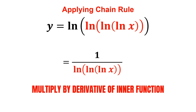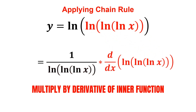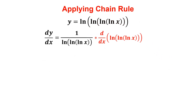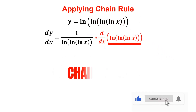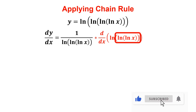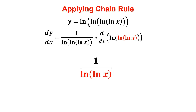According to the chain rule, we then multiply by the derivative of the inner function, which is natural log of natural log of ln x. Notice this is itself a composite function, so we apply the chain rule again. Taking the derivative of its outer function while the inner stays the same, we get 1 over natural log of ln x.